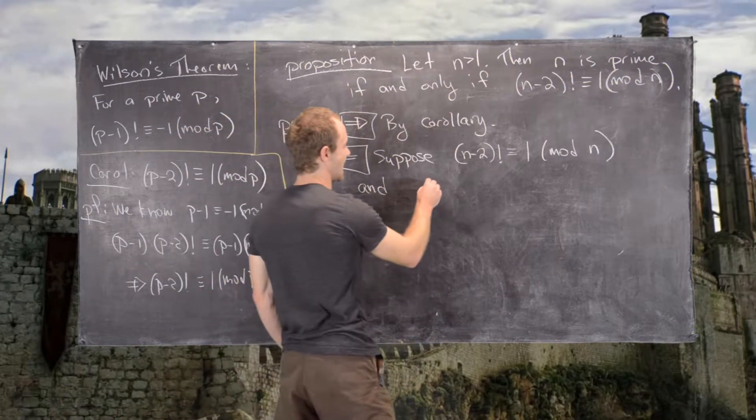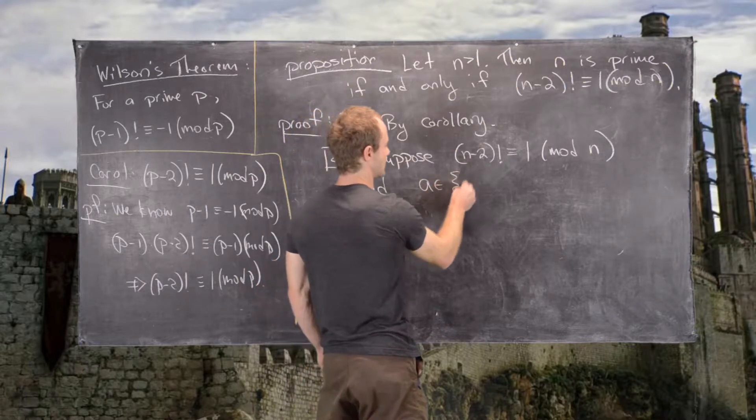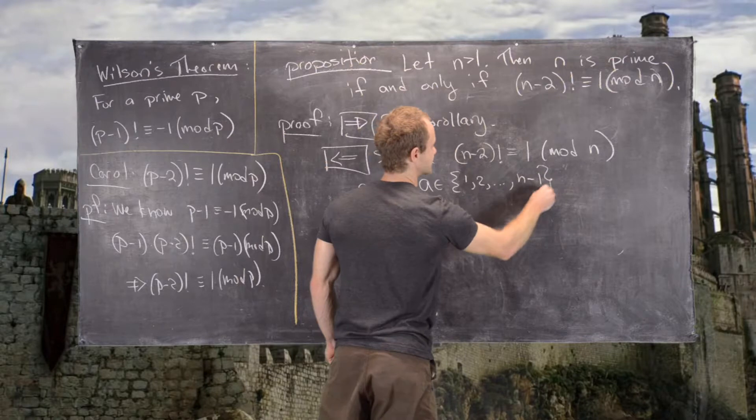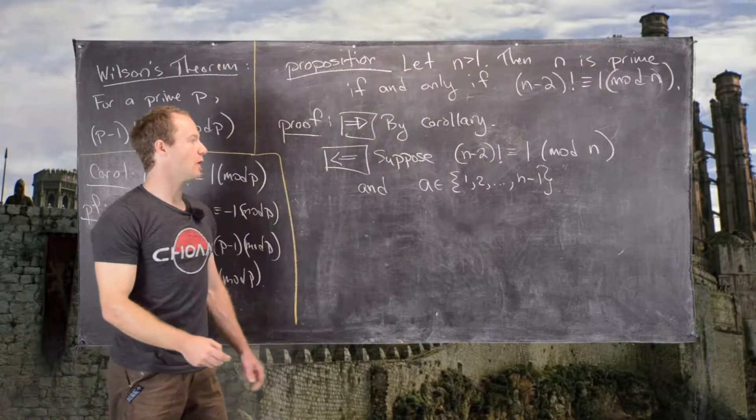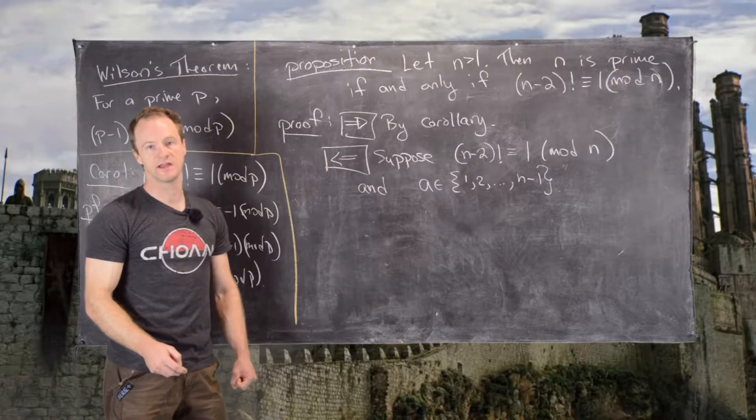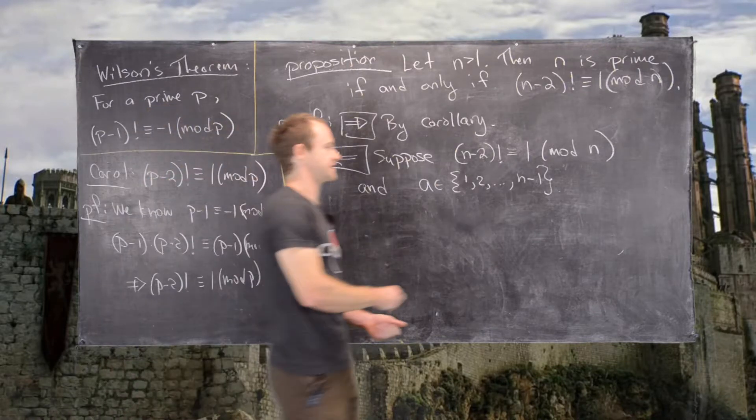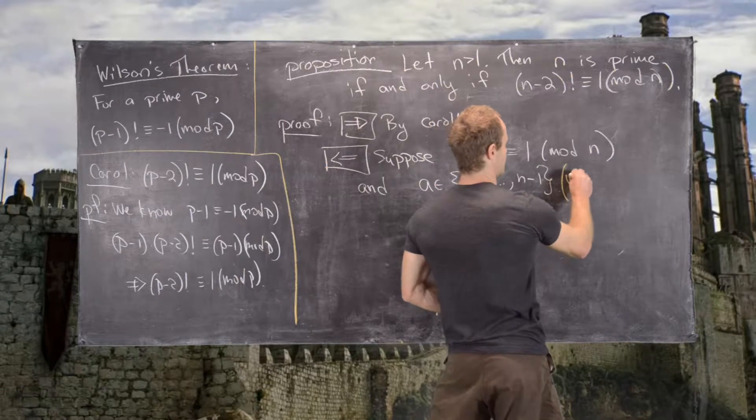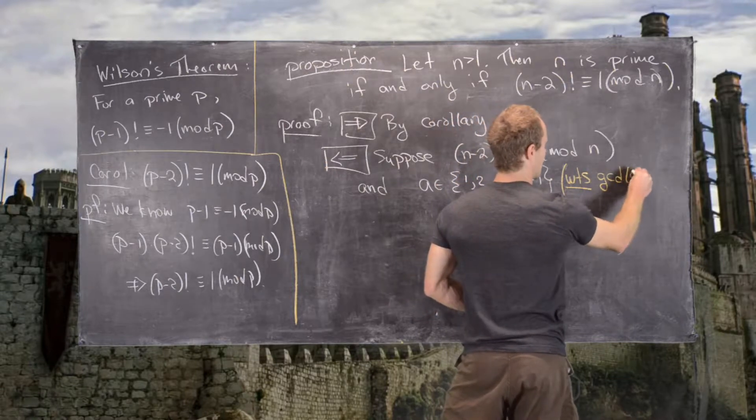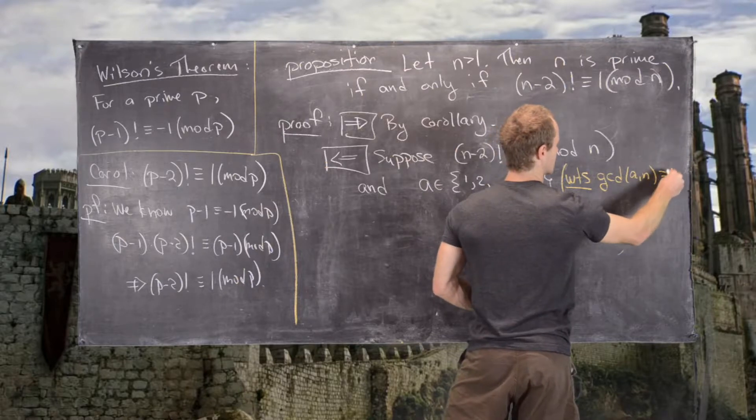And let's suppose that a is some number between 1 and n-1. So what we want to show is that gcd(a,n) equals 1. Let's put that up here. I want to show gcd(a,n) = 1.